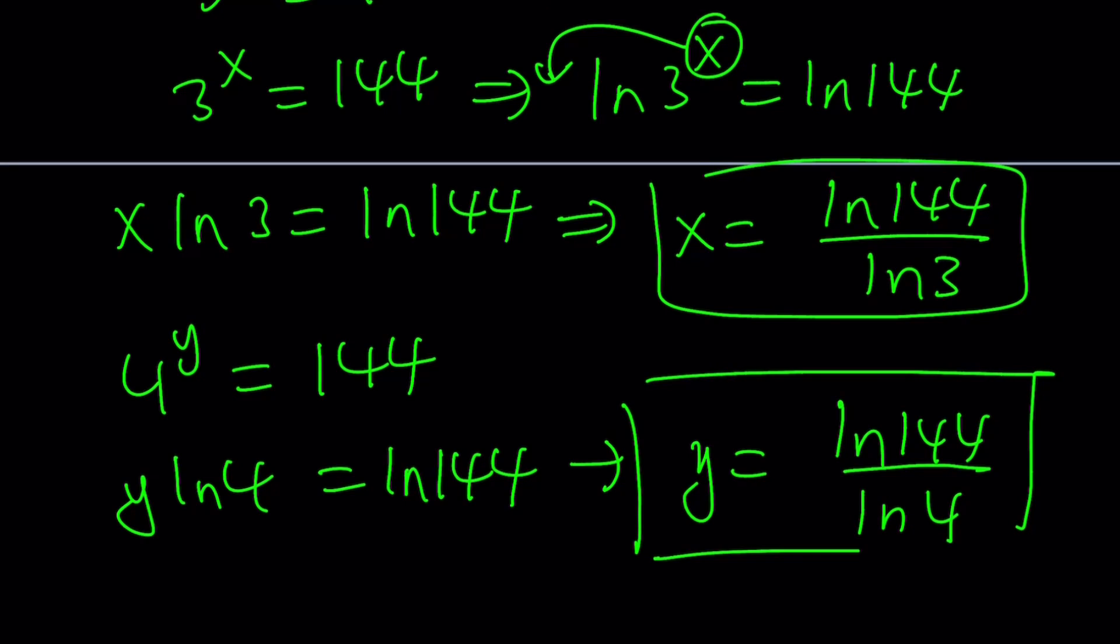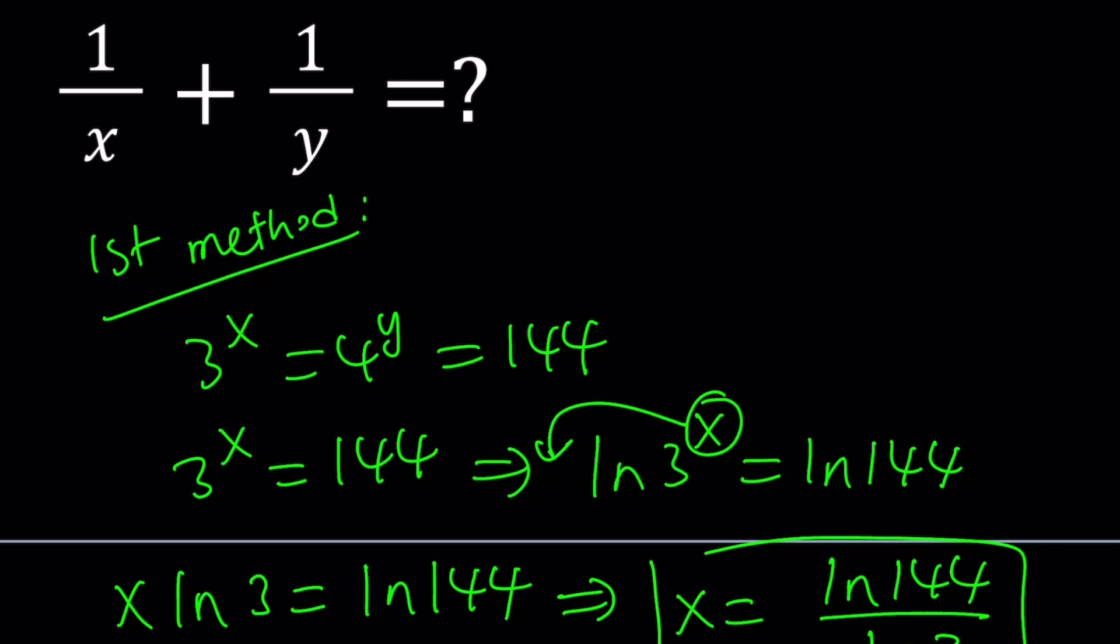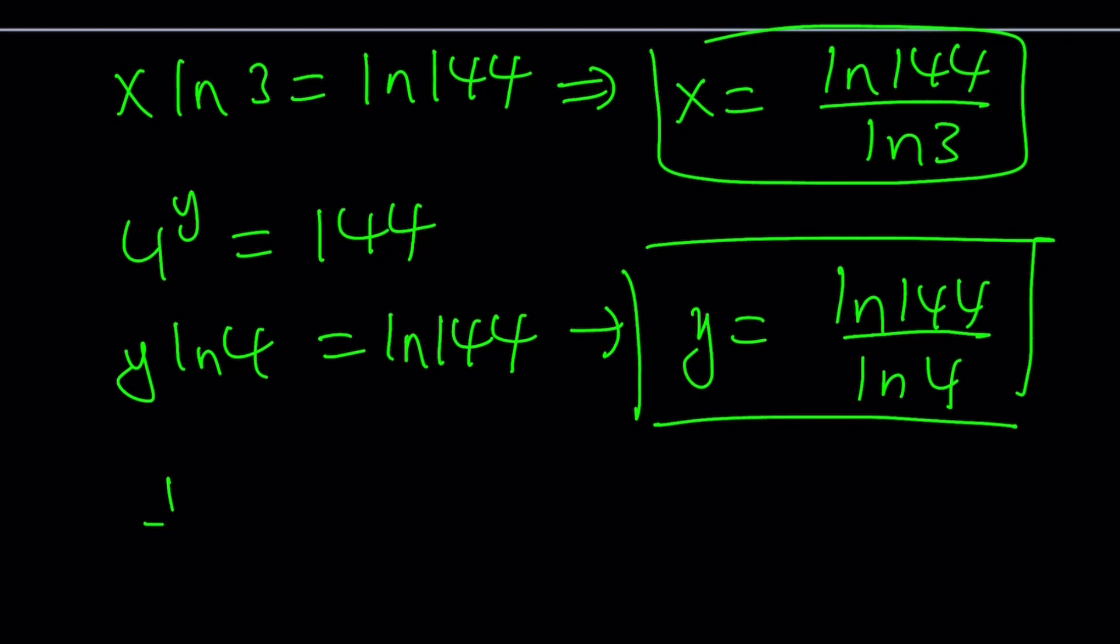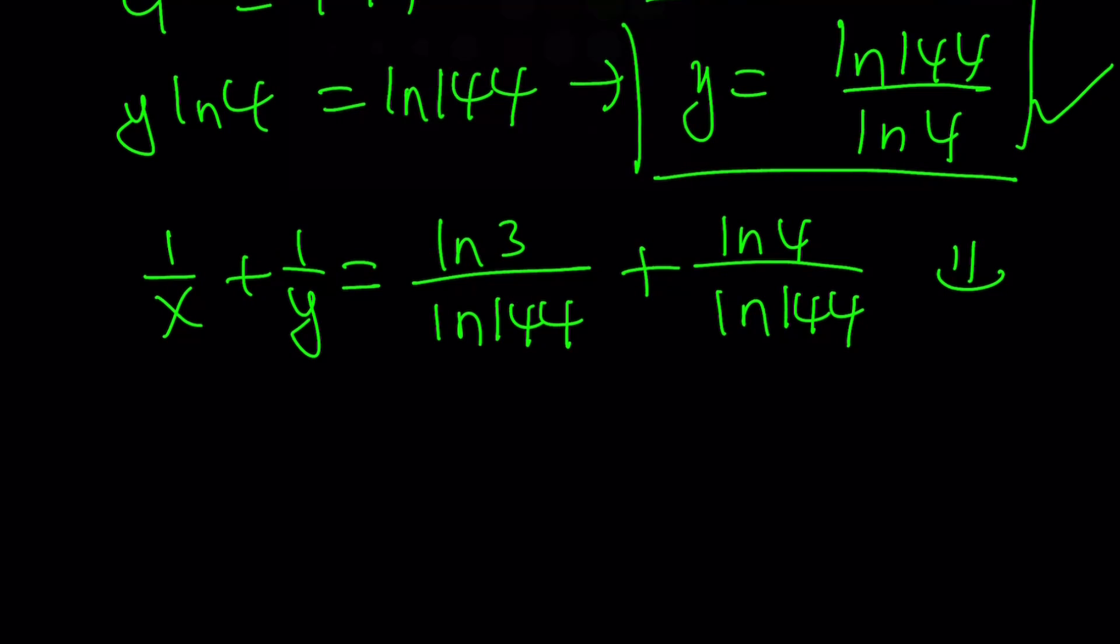Okay, so we got two fractions that have the same numerator, not the same denominator. But don't worry, we're going to flip them and add them, which is good because then we're going to have a common denominator. Let's go ahead and take a look at what we are looking for: 1 over x plus 1 over y. So 1 over x from here is just going to be the reciprocal, which is ln 3 over ln 144. And 1 over y is just going to be ln 4 over ln 144. Because we do have a common denominator automatically, we can just go ahead and add the numerator.